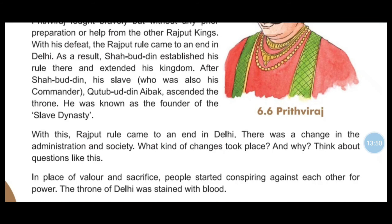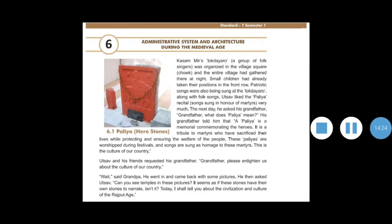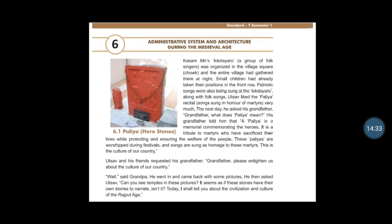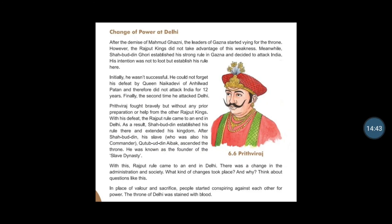In place of valor and sacrifice, people started striving against each other for power, and the throne of Delhi was strained with blood. So this was today's topic: the administrative system and architecture during the middle ages. We have studied literature, sculpture, architecture, Muhammad Ghazni, and the change of power at Delhi. Later on we will study some more topics — stay tuned and thank you for watching this video.